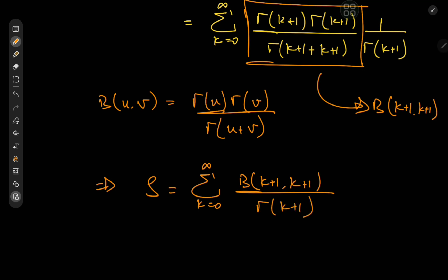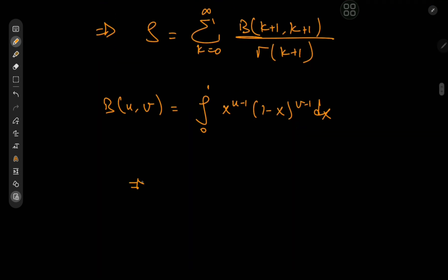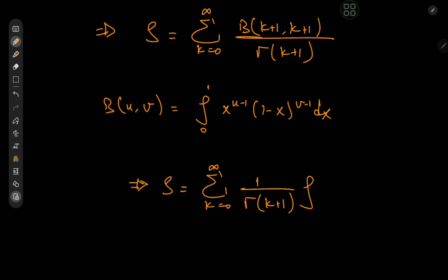Now we can invoke the integral form of the beta function. The beta function with complex arguments u and v is the integral from 0 to 1 of x to the u minus 1 times 1 minus x to the v minus 1 dx. This implies that the sum s equals the sum over k of 1 by gamma k plus 1 times the integral of x to the k plus 1 minus 1, so that's just x to the k, times 1 minus x to the k dx.